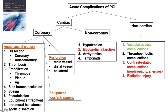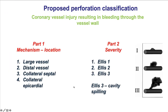Coronary perforations is one of the three types of coronary complications, the other two being acute vessel closure and equipment loss or entrapment. Traditionally, coronary perforations have been classified according to severity using the Ellis classification. Ellis 1 is staining of the wall without frank extravasation. Ellis 2 is extravasation through an exit hole less than 1 mm. Ellis 3 are larger, more severe perforations with an exit hole of 1 mm or larger. There is also Ellis 3 cavity spilling, in which the contrast is going into a cavity of the heart, such as a ventricle or the coronary sinus.